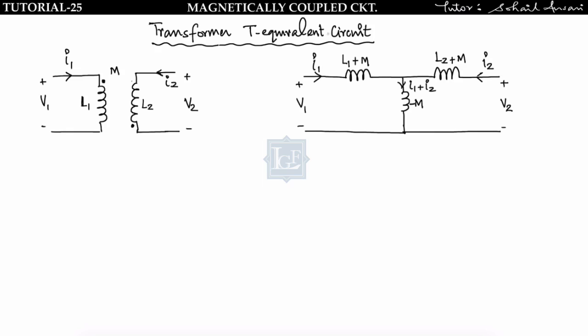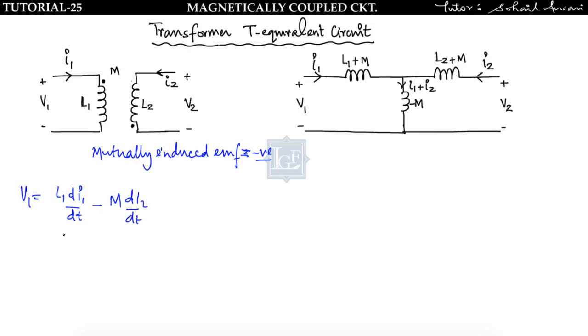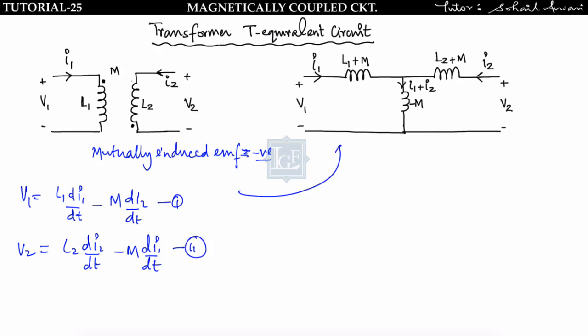There is another case: here current enters the dot in coil one but leaves the dot in coil two, so mutually induced EMF is negative. V1 = L1 di1/dt − M di2/dt and V2 = L2 di2/dt − M di1/dt. We arrange these equations in the same way as before to get the T-equivalent circuit. Whenever you get a problem based on a transformer, first check the dot convention and apply KVL to find the required parameters.